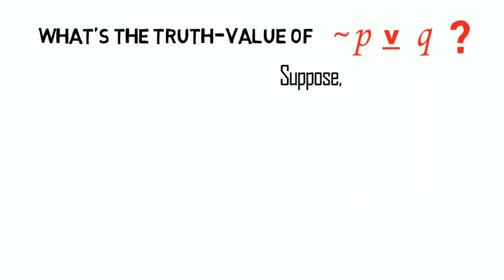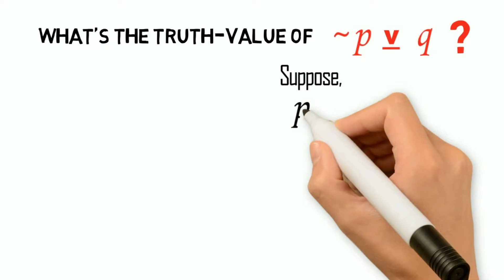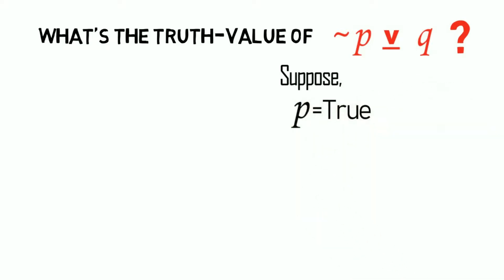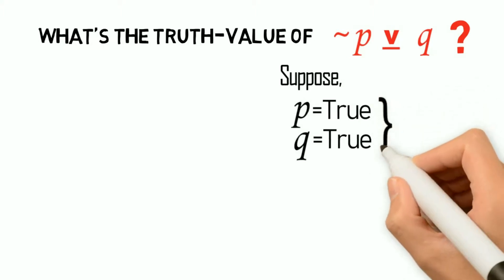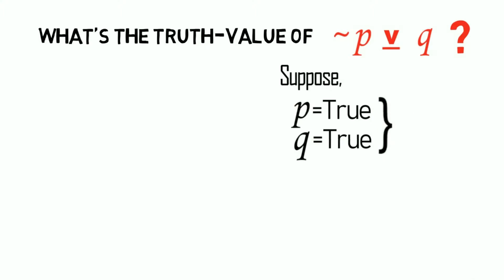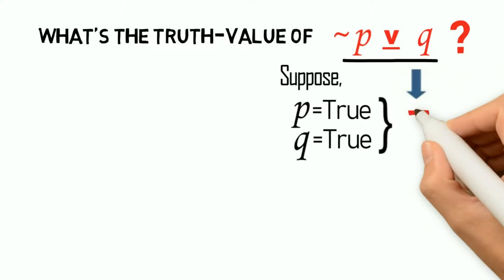Suppose that the truth value of P is true and Q is true. If P is true and Q is true, then the statement 'not P or Q, but not (not P and Q)' — is it true or false? Let's work through it.